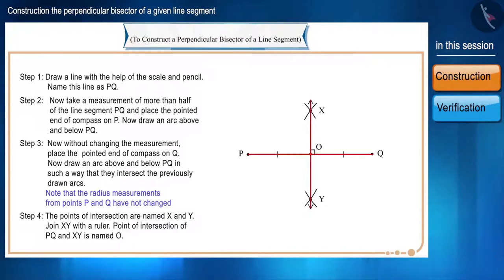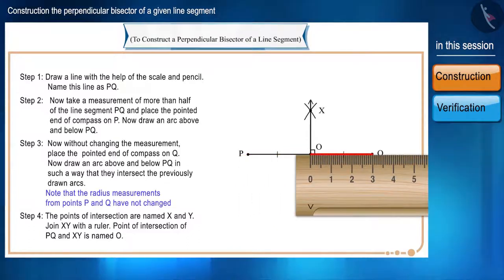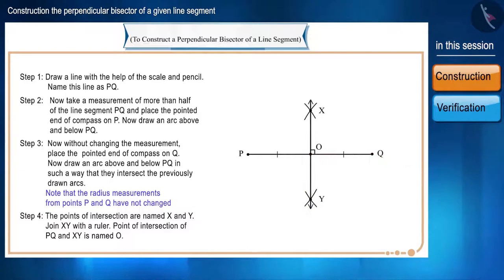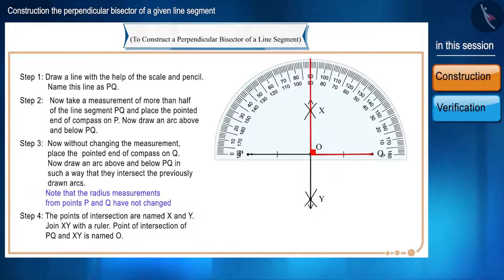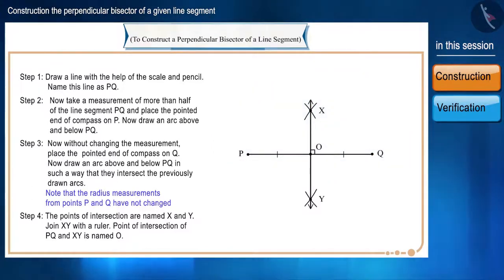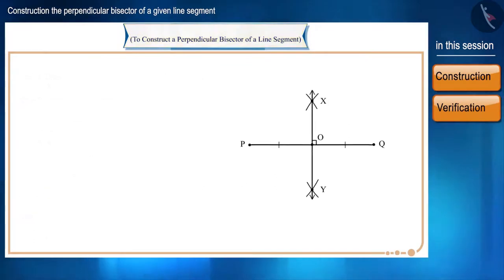XY is also perpendicular to PQ. You can check the measurements of PO and OQ with a scale to verify they are equal, and with a protractor verify that the angle formed is 90 degrees. In this way we have constructed a perpendicular bisector of a line segment. Now let's prove it mathematically as well.